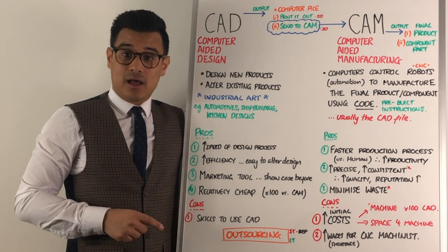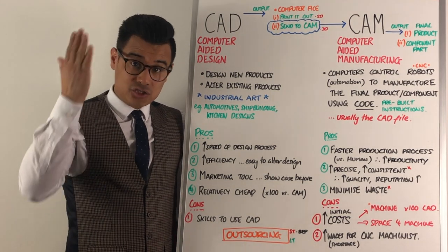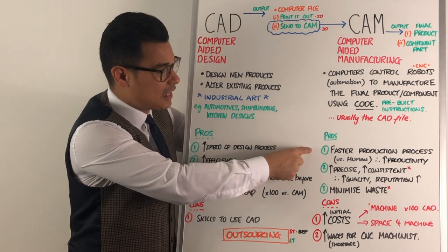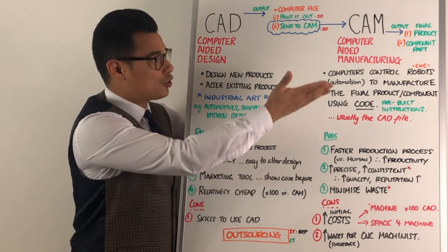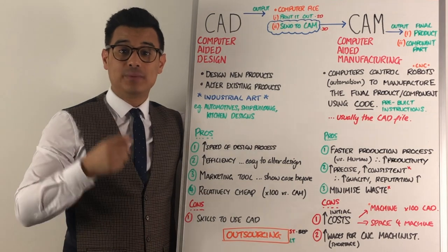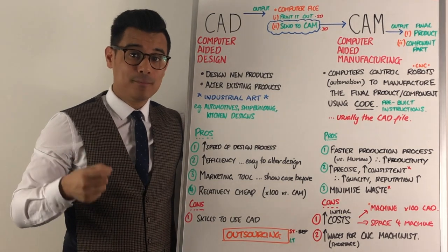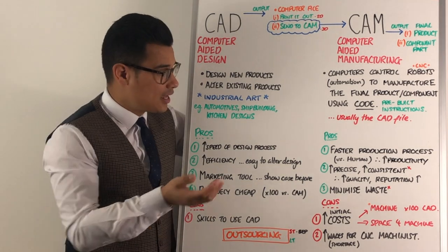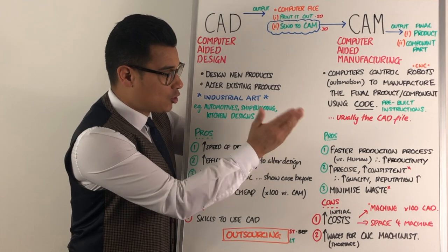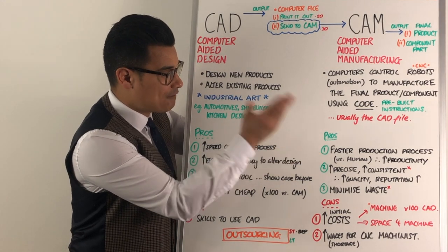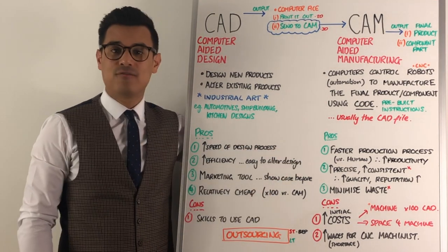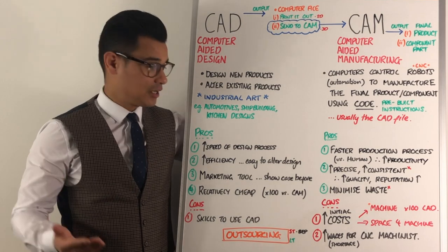Looking now at the advantages of CAM: the main advantage is that you're getting the machine to do what would otherwise be done by workers, and the machine can work 24/7. It's also quicker, so it's going to be a faster production process versus a human, and you're therefore going to get higher productivity.